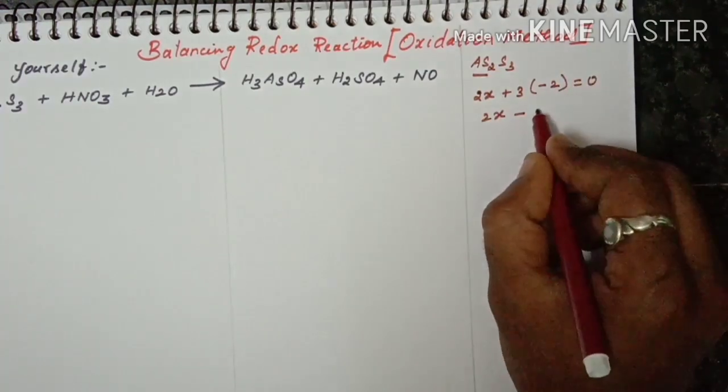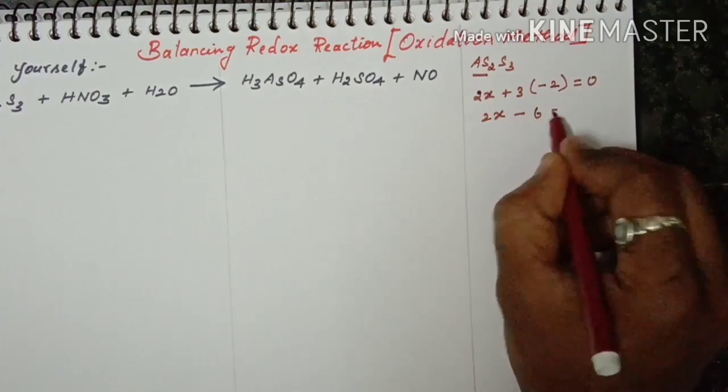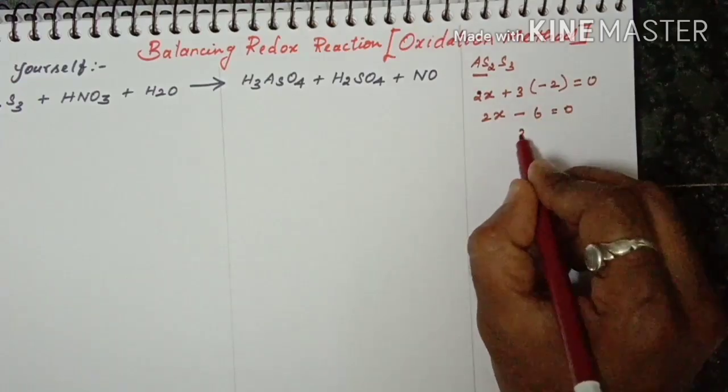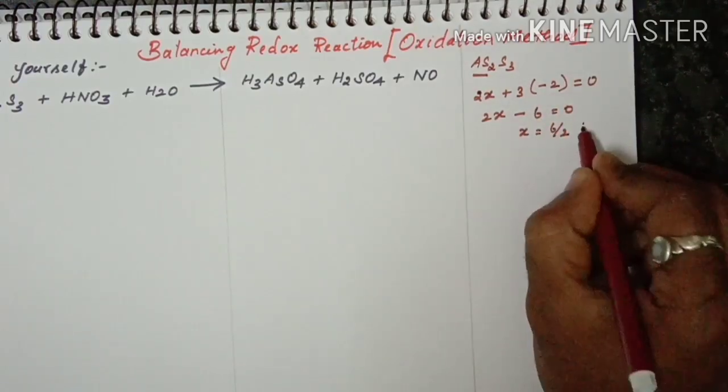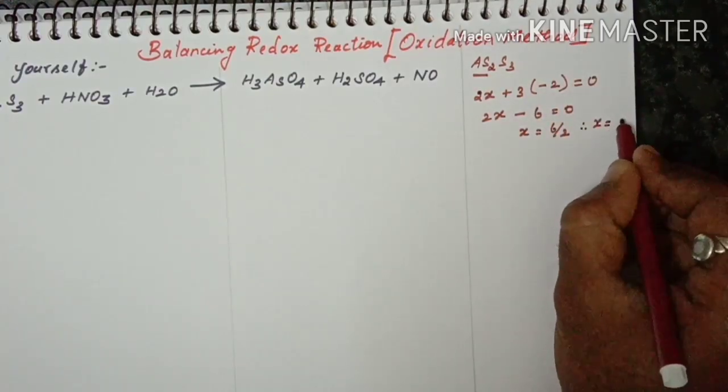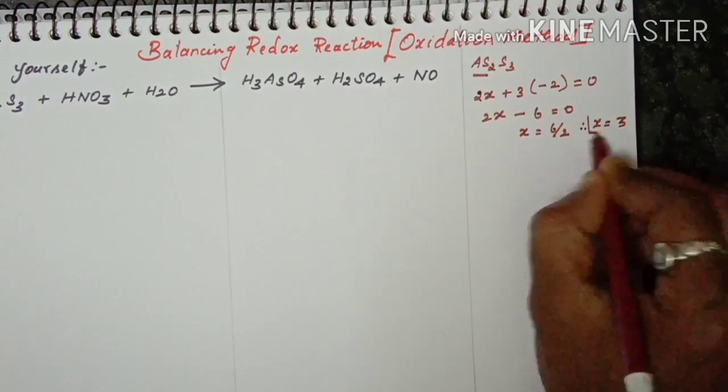For AS2S3, finding the oxidation number of arsenic: 2x minus 6 equals 0, so x equals 6 divided by 2. Therefore, x equals plus 3.